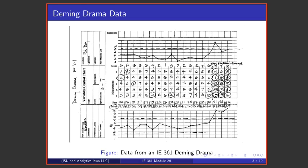The data that we will use for an example in this module and the next come from an IE 361 dimming drama demonstration. There were 18 samples taken, samples of size 5, and there were ranges and sample means computed for these 18 samples and plotted. The ranges are plotted above, the means or averages are plotted below, and it's these data that we are going to analyze in this module 26.